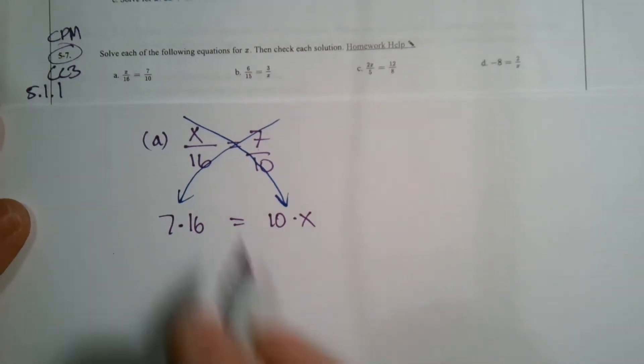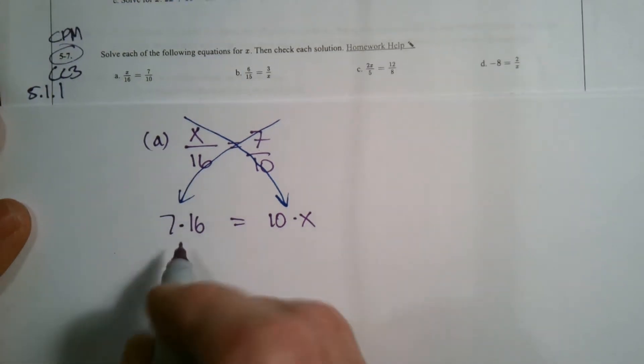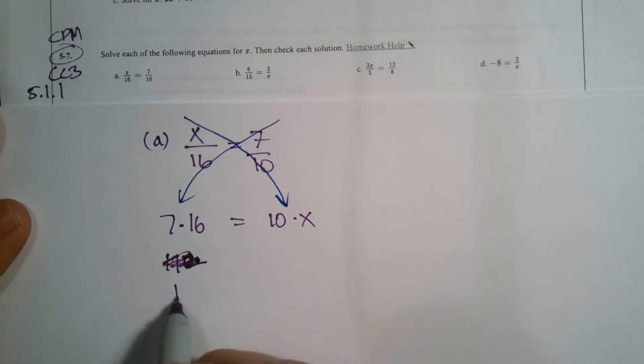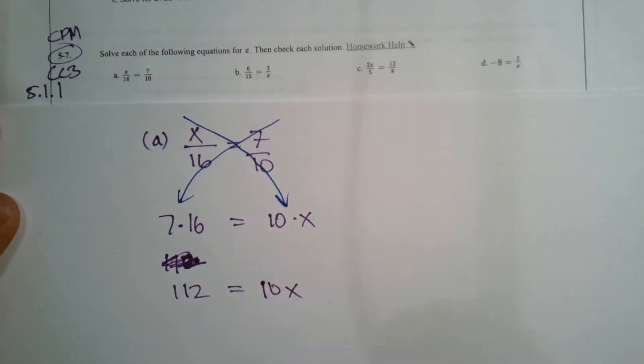So this becomes 7 times 16 is equal to 10 times X. So now you rewrite your equation without the fractions. So 7 times 16 is—that's 102? No, excuse me, actually 112. I'll do my math real fast there. Let me rewrite that. Sorry. 112 is equal to 10X, correct?